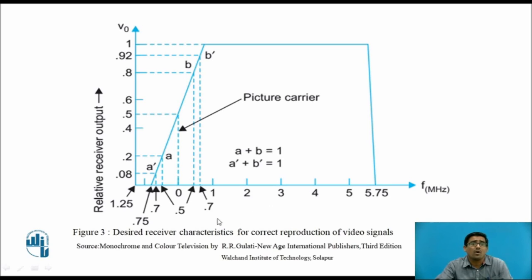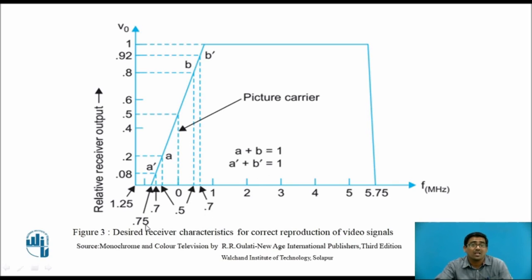Similarly, at 0.7 MHz, the signal is present at both upper and lower sidebands. For the upper sideband at 0.7 MHz the value is 0.92, and a' for the lower sideband is 0.08. Adding 0.92 + 0.08 = 1, so the condition a' + b' = 1 is satisfied. At 0.75 MHz, the lower sideband is 0 and the upper sideband is 1. Therefore 0 + 1 = 1, and the characteristic a + b = 1 for the vestigial sideband is satisfied.